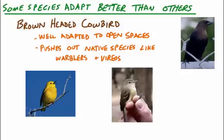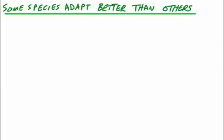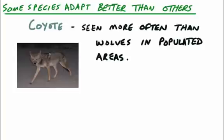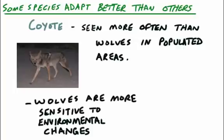Another species that adapts well to change is the coyote. The coyote has a close relative, the wolf, but you see coyotes around urban areas much more than wolves because they're better adapted to change. Wolves are more sensitive to environmental changes and we don't see them around populated areas as much, although they are quite similar animals.